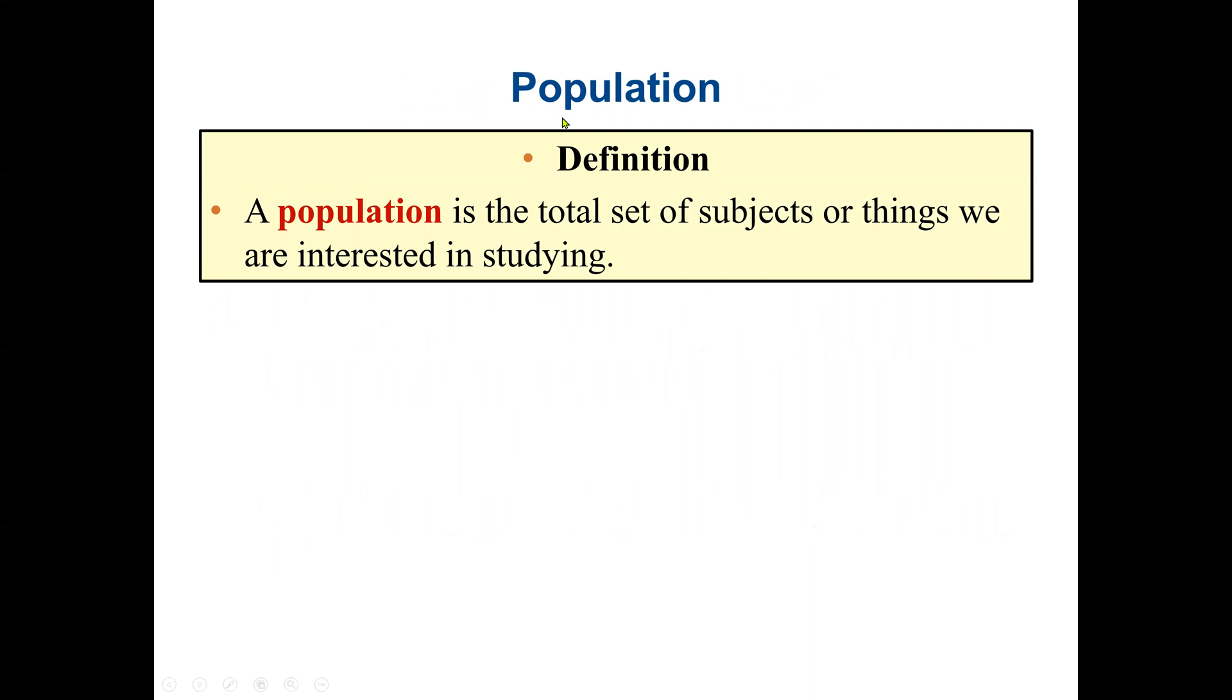So we start with our definitions. First is population. A population is the total set of subjects or things we are interested in studying. So an example is if I'm interested in studying adults between the age of 20 to 30 in New York City, then my total population will be all the adults between that age in New York City. It can be any entities, either a person, an item, inventory, etc.